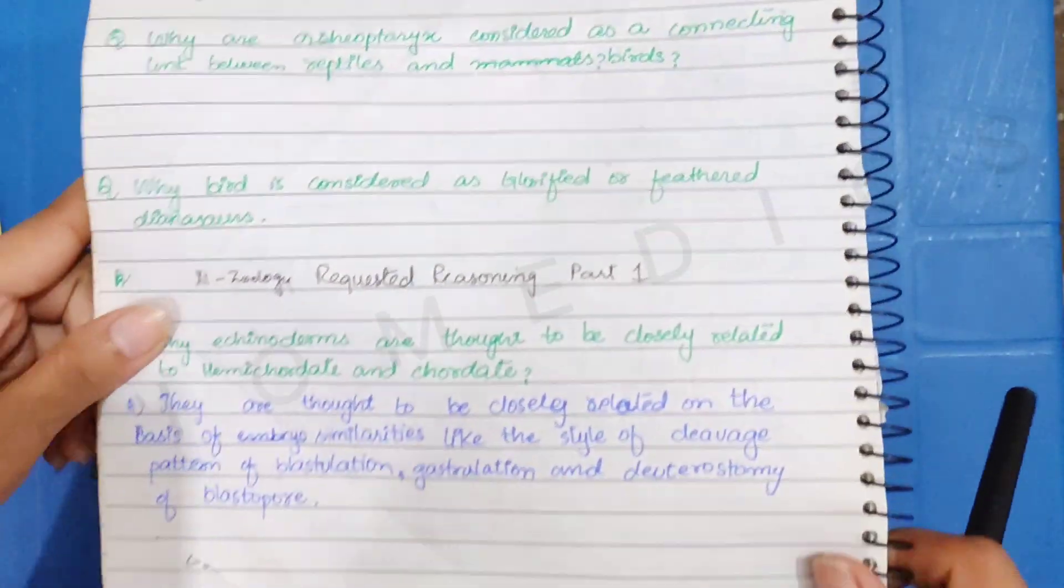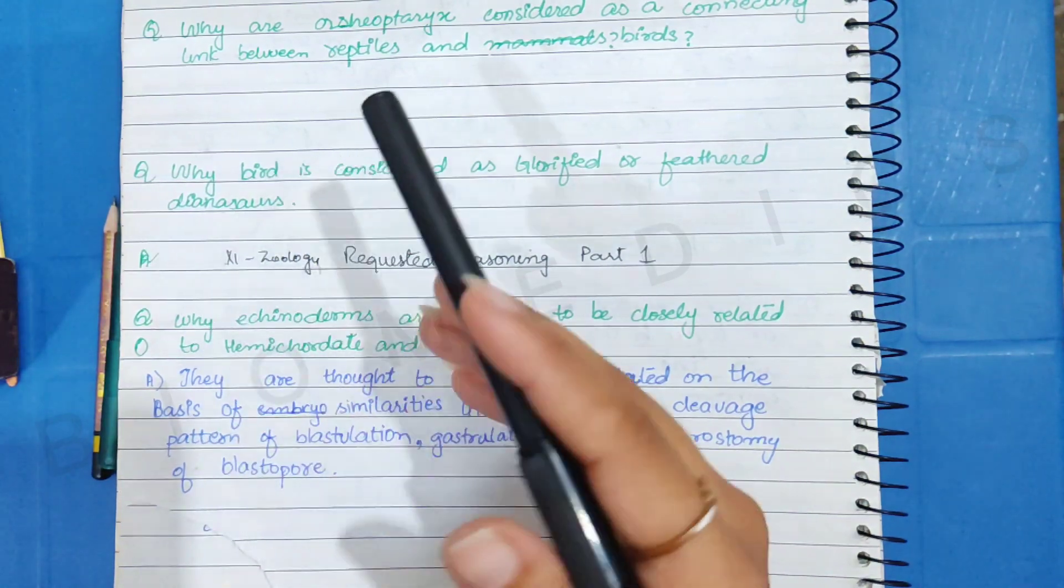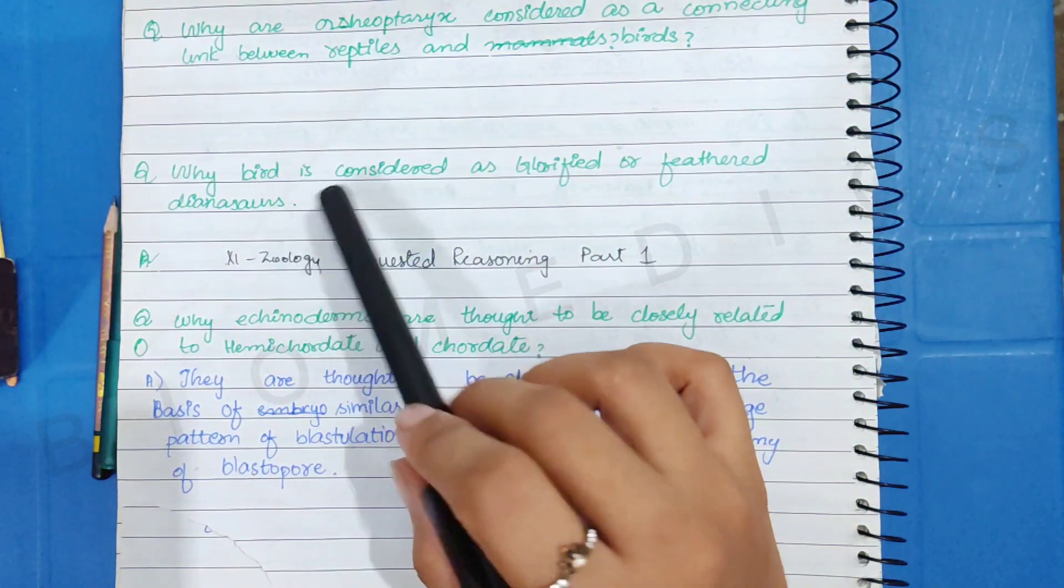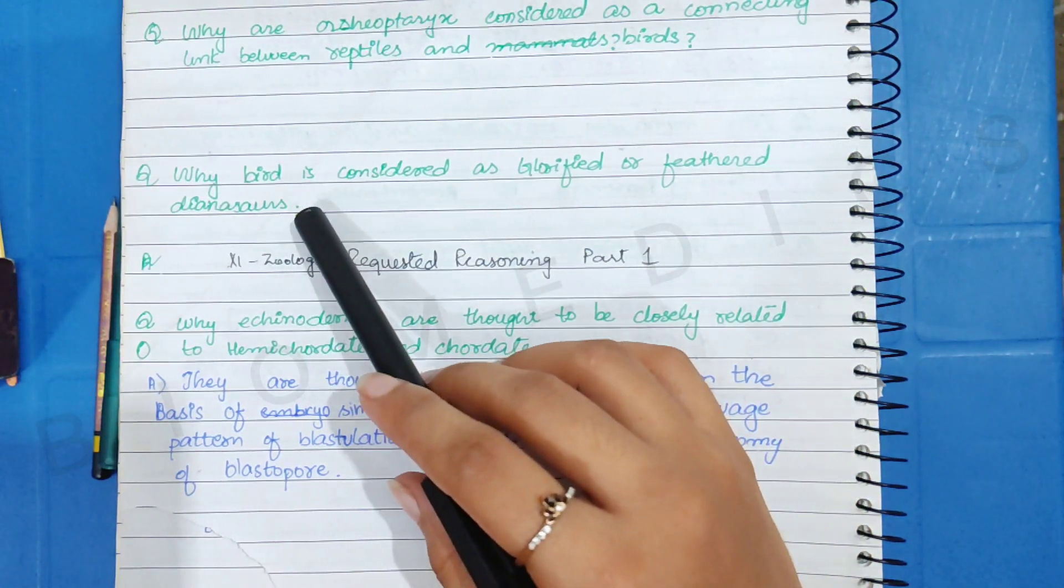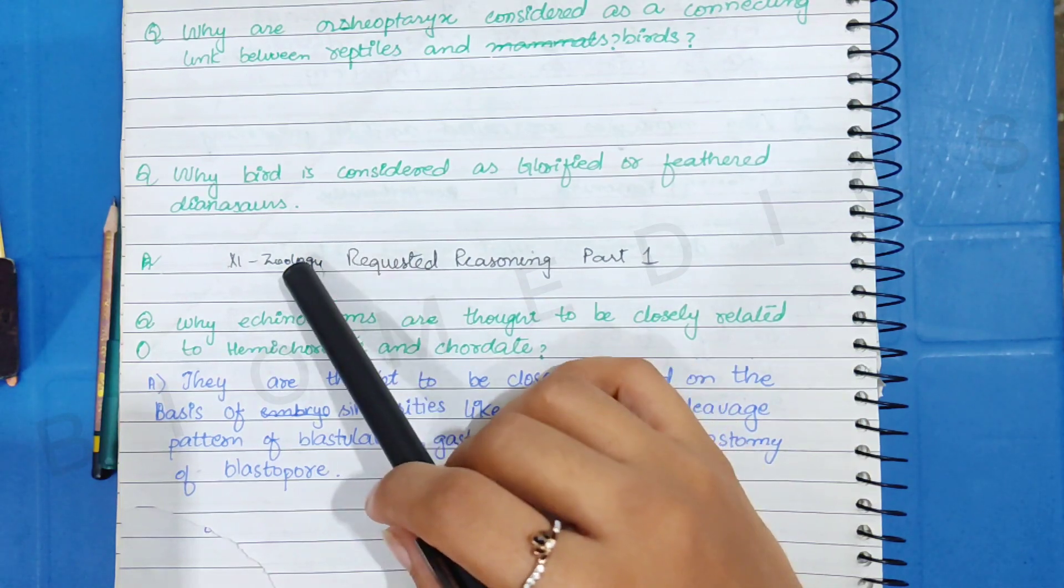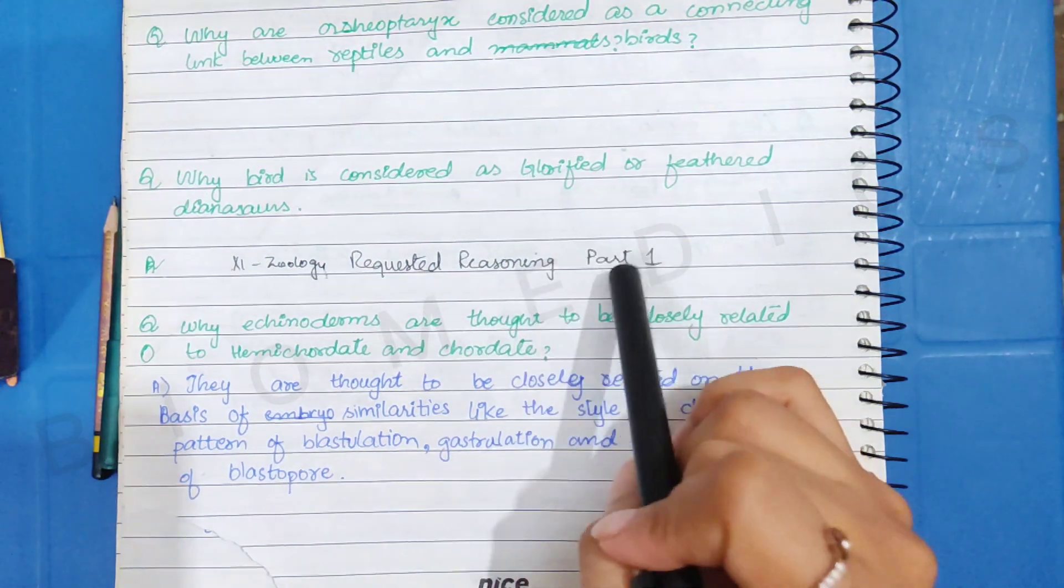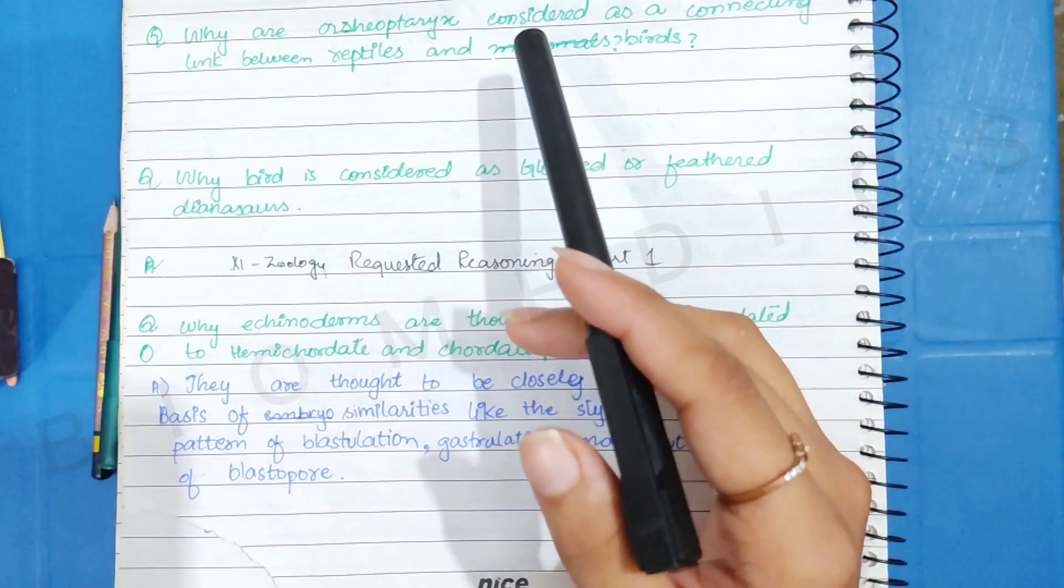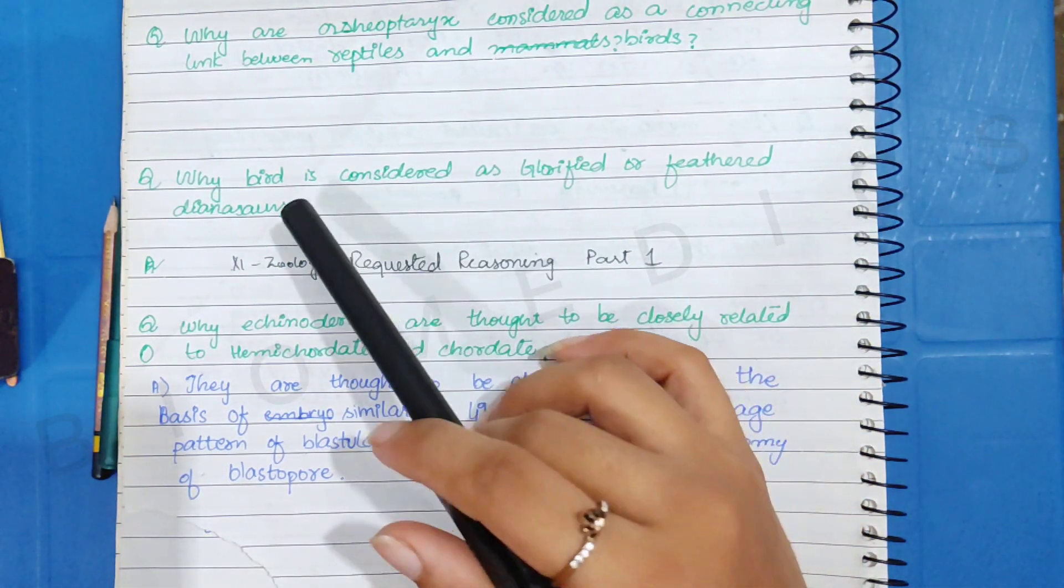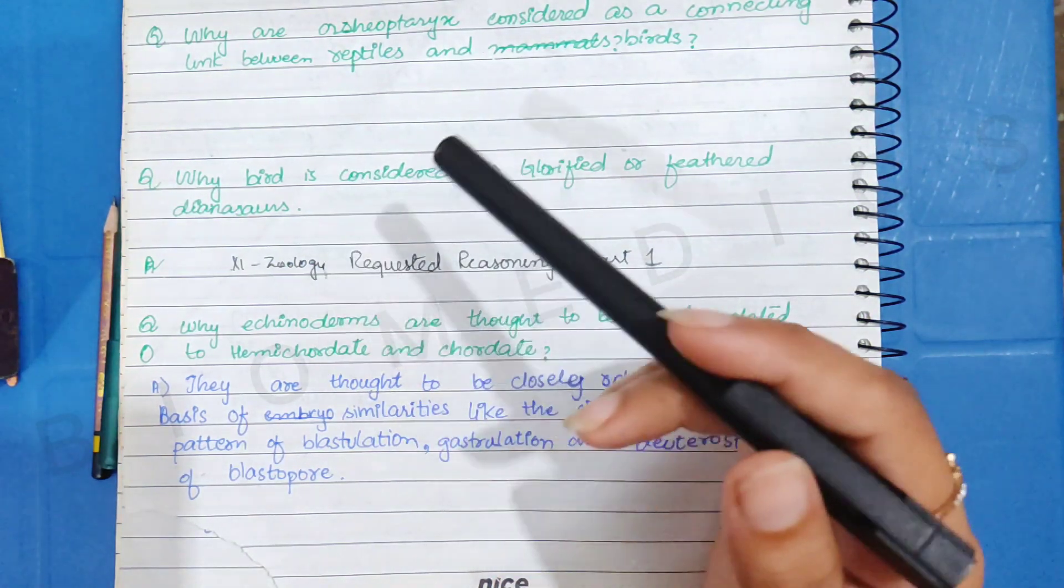You have a next question. Why are birds considered as glorified or feathered dinosaurs? This is a little bit related question. That is why birds are glorified reptiles. This is why I have solved the first part of the question in the first year Archeopteryx Requested Reasoning Questions. It is solved in part 1. So I will give you a link in the description. I will give you a reason that this is why birds are evolved from reptiles. This is why we call glorified reptiles.